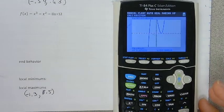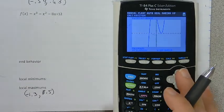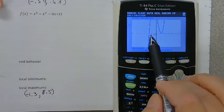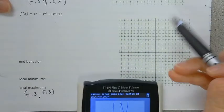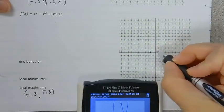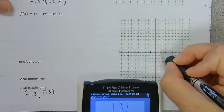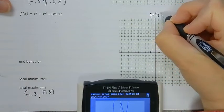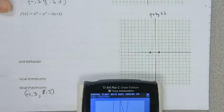So instead of going by ones on this I'm going to go by twos. So this was at negative 1, 2, 3. So this would be about right here for negative 3. And it was at 2, so I'm going to put it right here. I'm going to go by twos on this graph.